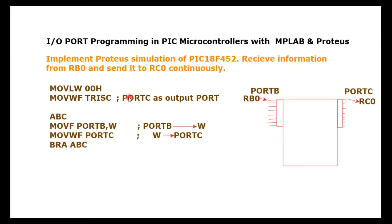The next instruction is MOVF Port B to W, which means whatever data is coming from Port B — since Port B is the input port — it will be sent to the working register W. The following instruction is MOVWF, which moves the working register content into a file register, specifically Port C.